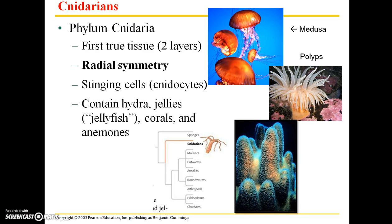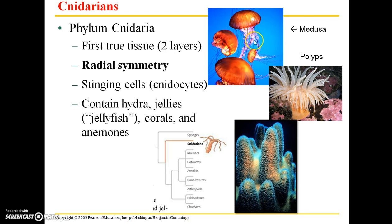Hi students, welcome back to the chapter 17 lecture. As I was saying in the last recording, there are two main body forms to the cnidarians. One of those is the medusa, which is demonstrated here by these jellyfish, and then the other form is what's known as a polyp.